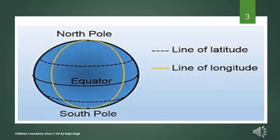Now look at the globe. Can you see the lines that run in the east-west direction? The full circles that run from east to west are called parallels or lines of latitude — meaning complete circles running in the east-west direction.